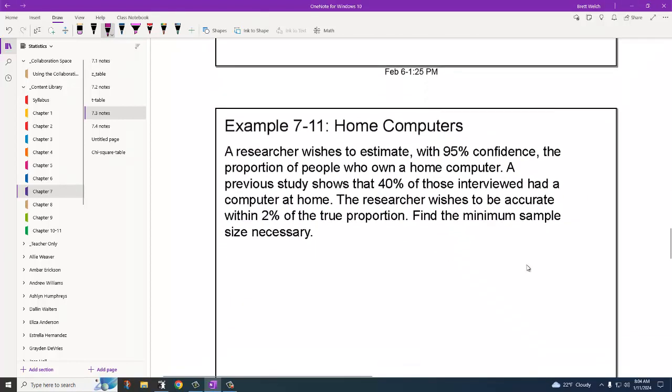A researcher wishes to estimate with 95% confidence the proportion of people who own a home computer. A previous study shows that 40% of those interviewed had a computer at home. That's going to be P hat, will be 0.4. That's from a previous test. And Q hat will be 0.6. If you ever don't know what P hat and Q hat are because you don't have a previous study to go off of, you're going to use 0.5 and 0.5. You just call it a 50-50.